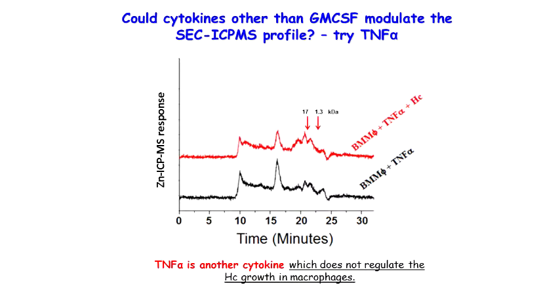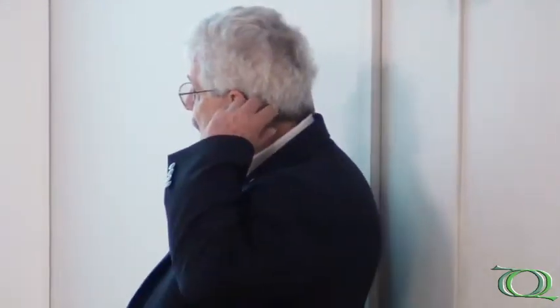Could cytokines other than GM-CSF reduce or change the size exclusion ICP-MS profile? We can add that other cytokine, and you see — in the area around 20 minutes — nothing. It doesn't matter if it's infected or not infected; it just doesn't matter. That particular cytokine doesn't activate. It is very useful in animal systems, but it does not happen to activate these cells we were using.